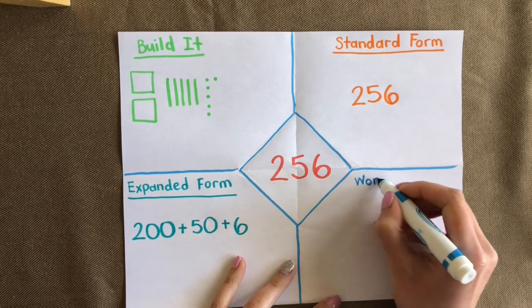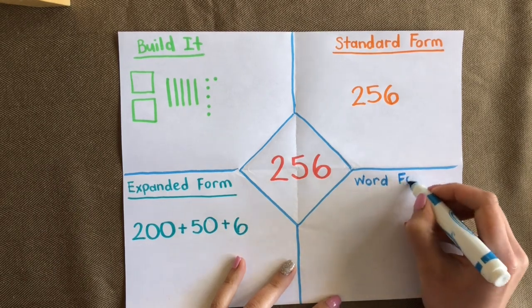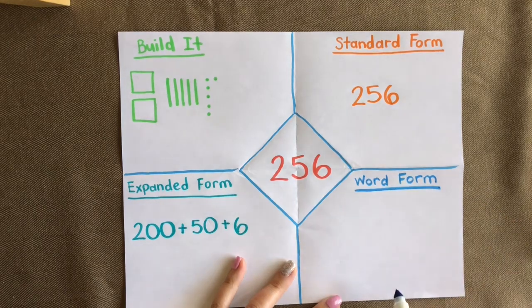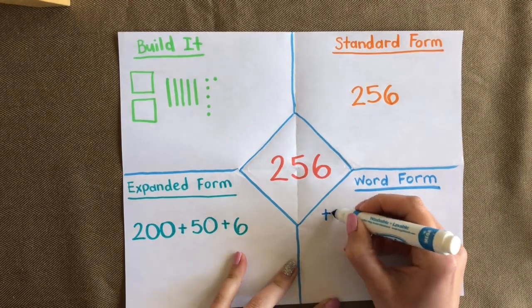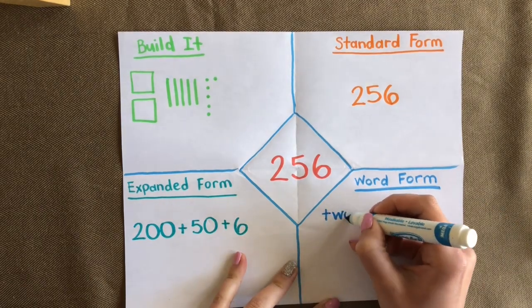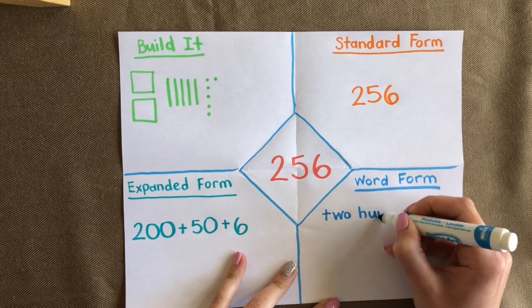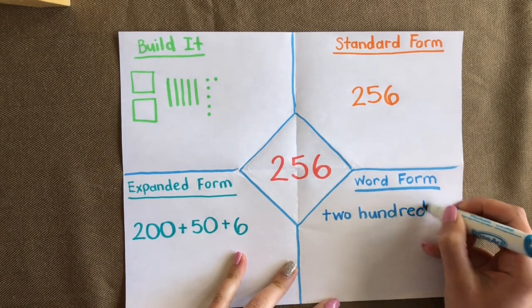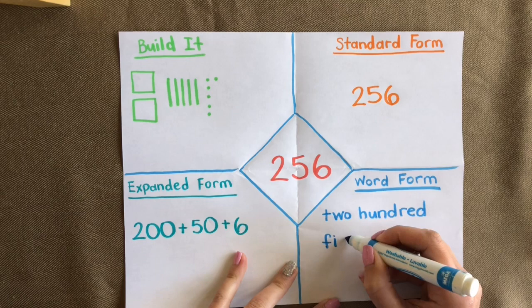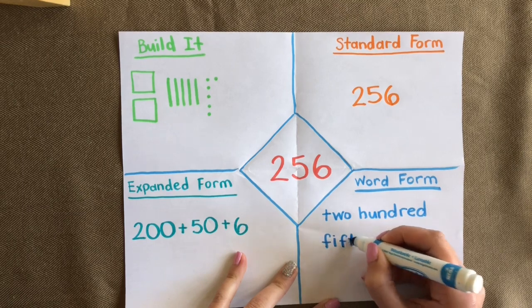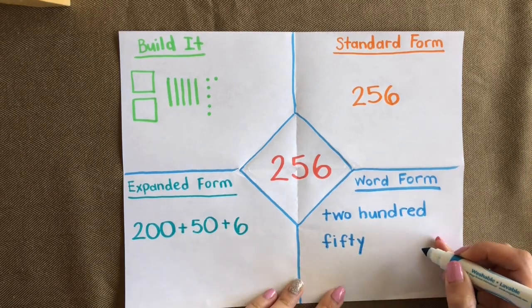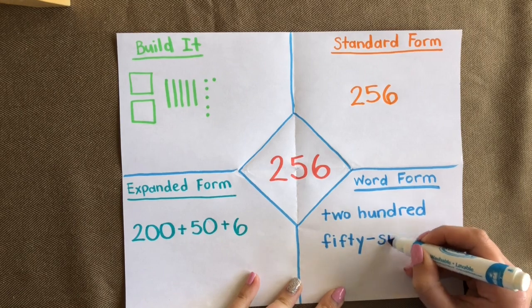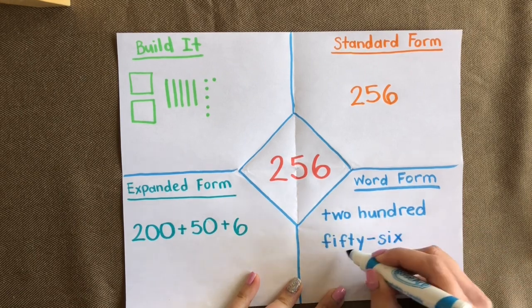Let's show our number in word form. 256 is written as two hundred fifty-six — with a dash between the tens and the ones.